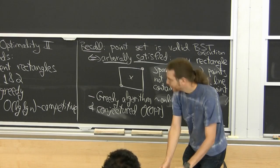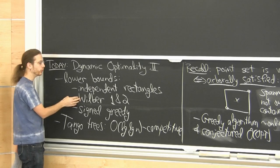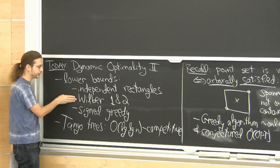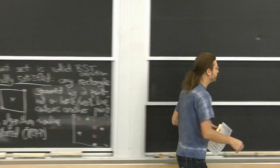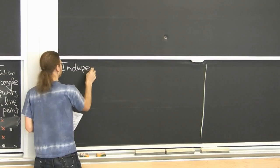Let's jump into the lower bounds. We're going to cover three different lower bounds. Independent rectangles is a generic class of lower bounds. Then we'll see two specific choices of these independent rectangles — which are actually older than this result. Signed greedy will turn out to be the best lower bound, better than all the ones we'll cover, but each has its own uses for analysis.